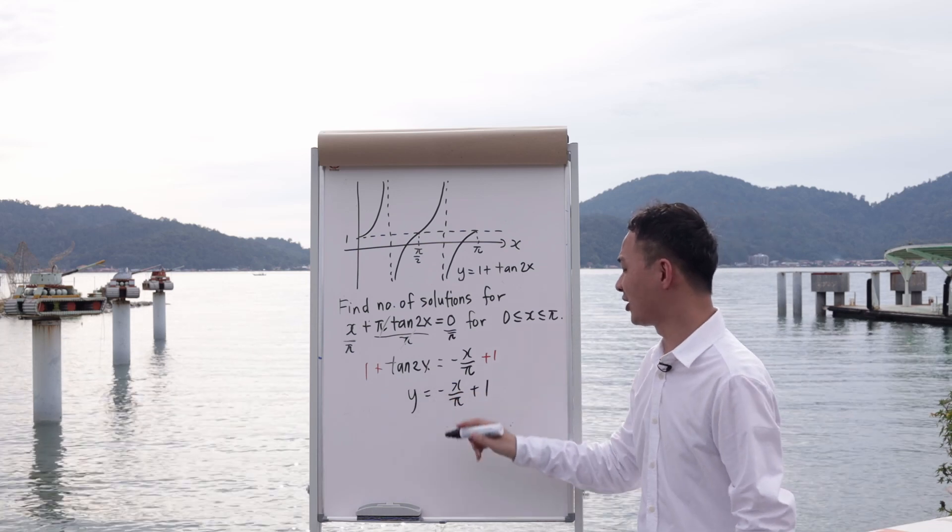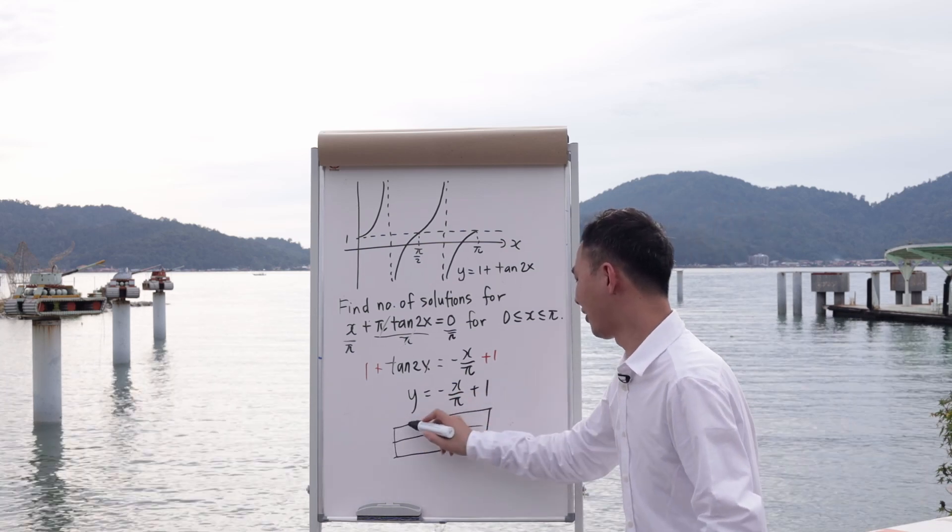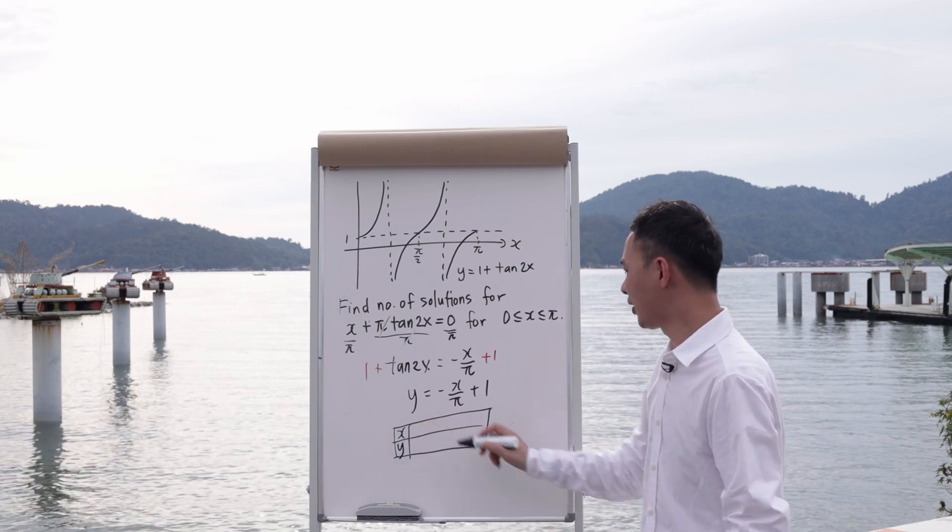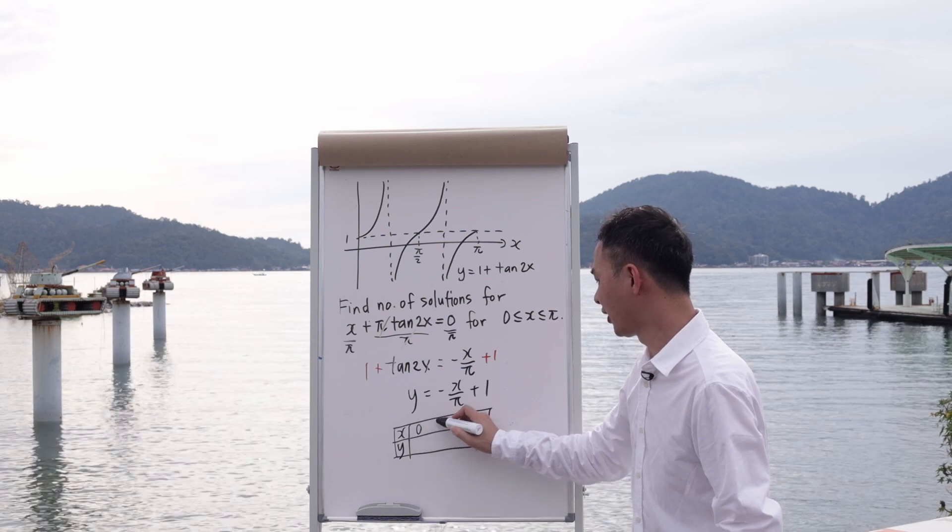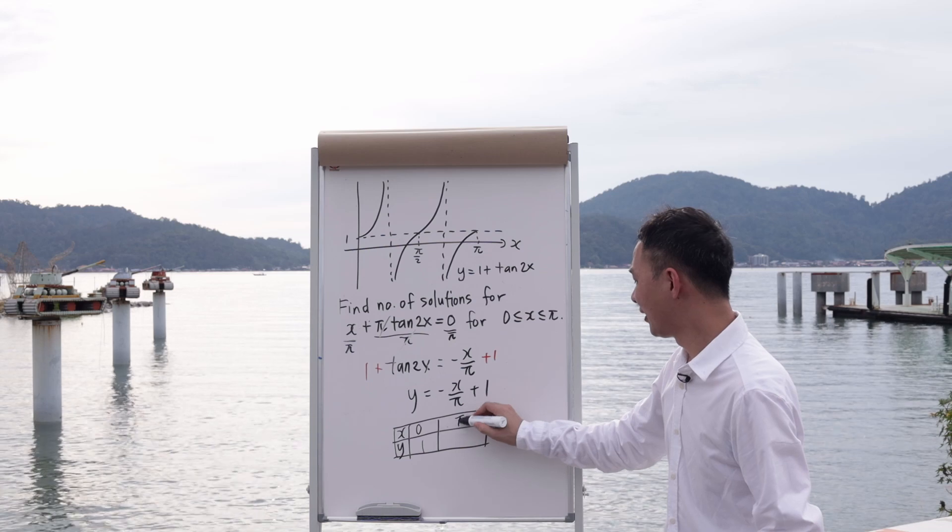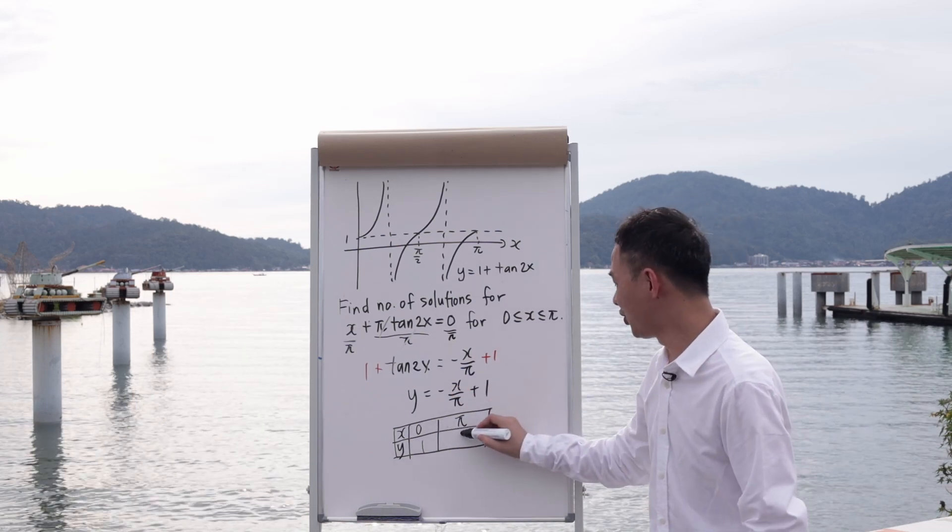So in order to draw this straight line, it's actually quite easy. You just form a table by yourself and then you insert some values for x and y. So normally what I will do is I will try to substitute x equals to 0. When x equals to 0, I will get 1. And then I will substitute in maybe x equals to π. x equals to π here, I have negative 1 plus 1, isn't it? Which is 0.